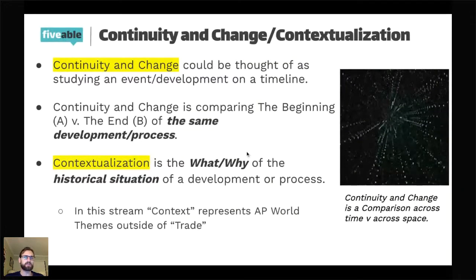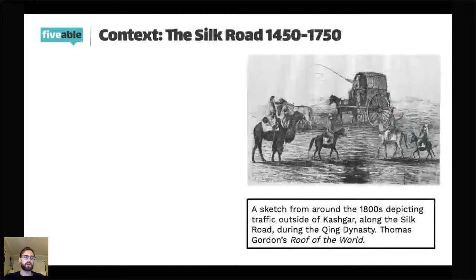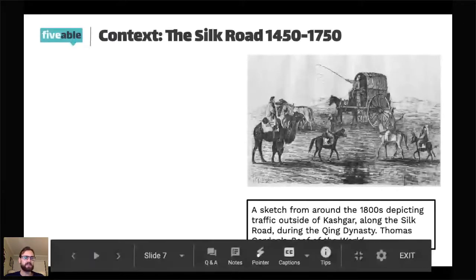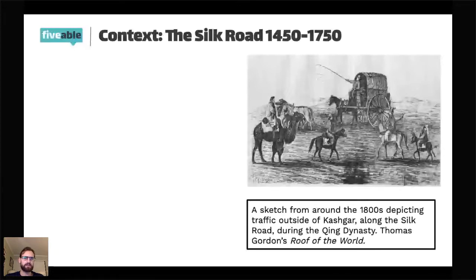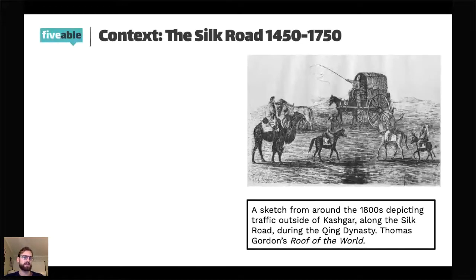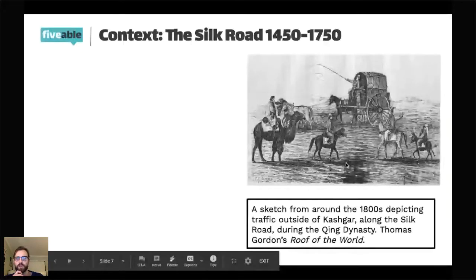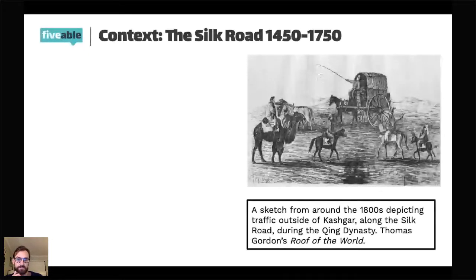We're going to get started by talking about the Silk Road. I have a picture here — a sketch from around the early 1800s from Kashgar, a city along the Silk Road in China during the Qing Dynasty. Kashgar is one of the cities you should be familiar with for Unit 2 as an illustrated example of a trading city. What do you see in this sketch?